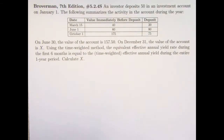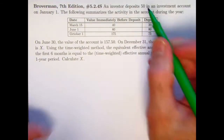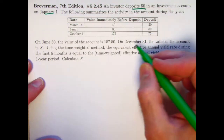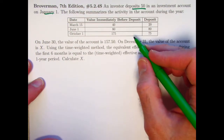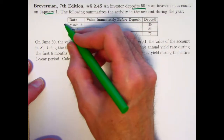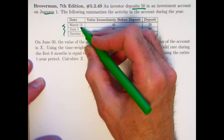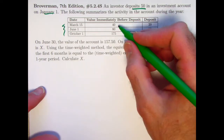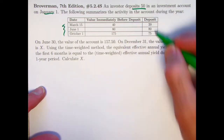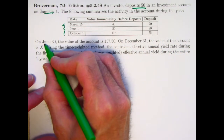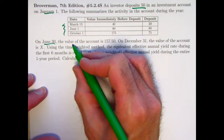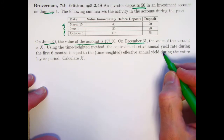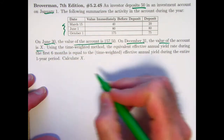We have an investor depositing 50 in an investment account at the beginning of the year, January 1st. We've got a summary of the activity on the account during the year with deposits on March 15th, June 1st, and October 1st, along with the value immediately before each deposit. On June 30th, halfway through the year, the value of the account is 157.5. At the end of the year, December 31st, the value of the account is X.